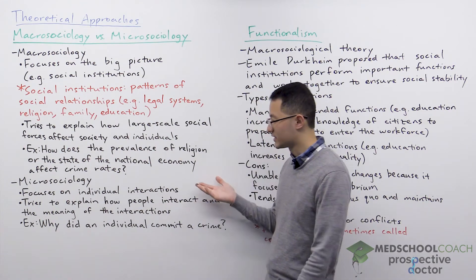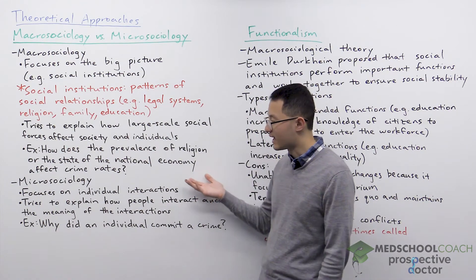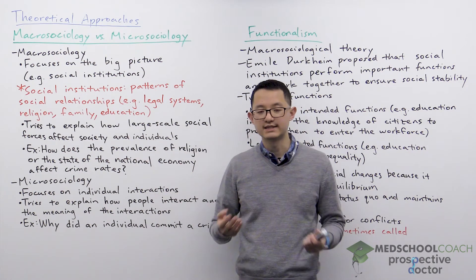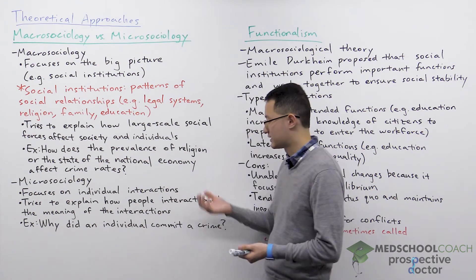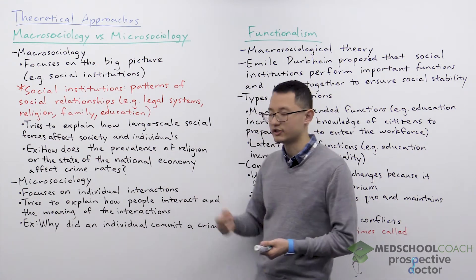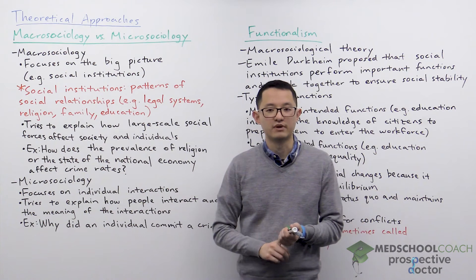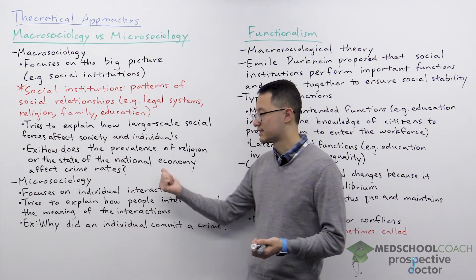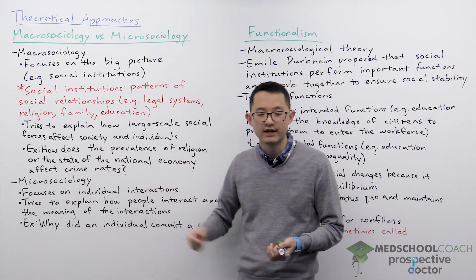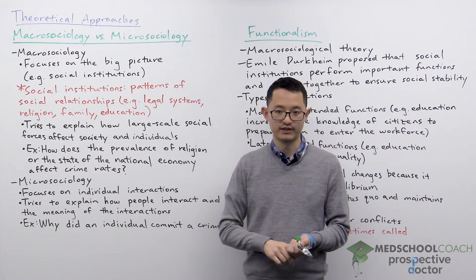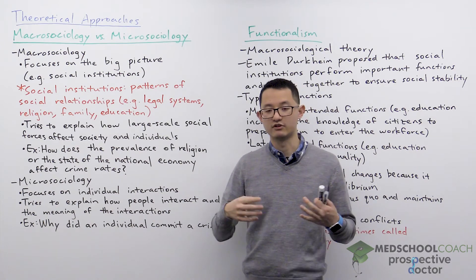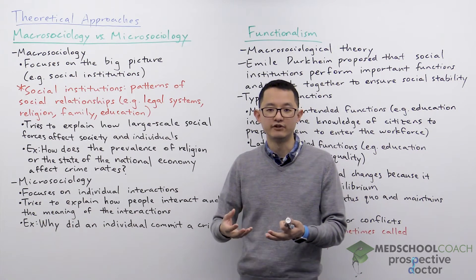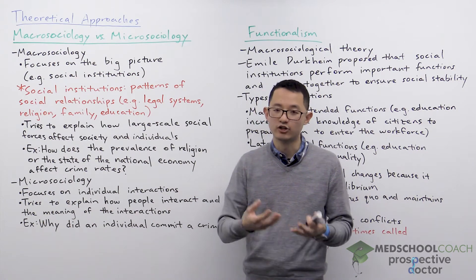A couple of examples of questions that macro sociologists would try to study are: how does the prevalence of religion affect crime rate, and how does the state of the national economy affect crime rates? So essentially they are taking a big-picture view to study crime.